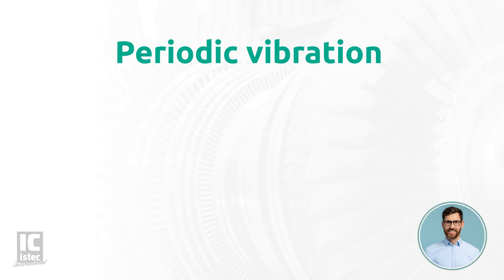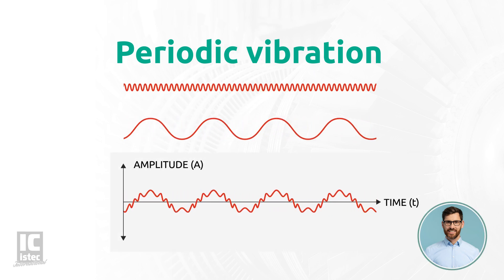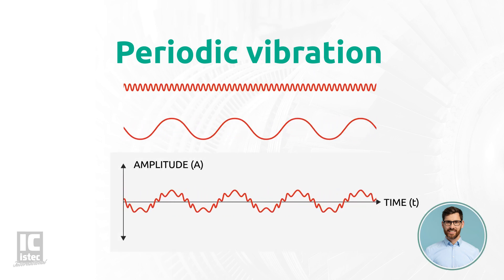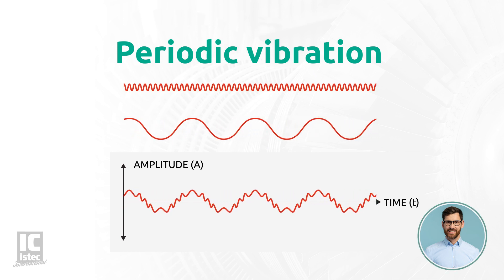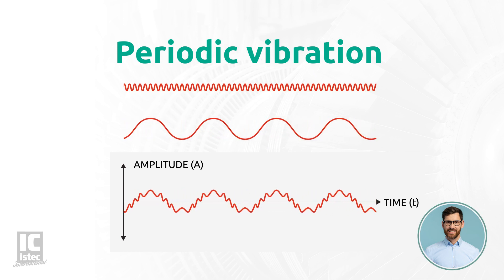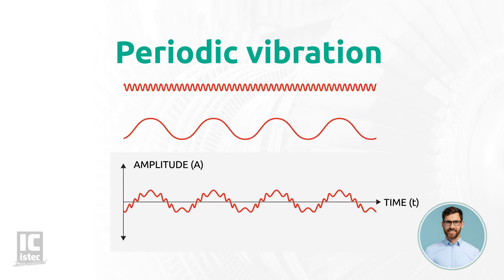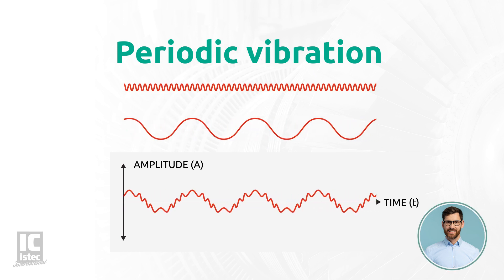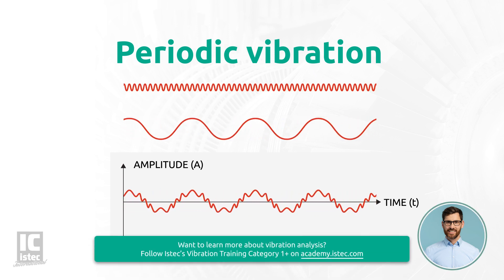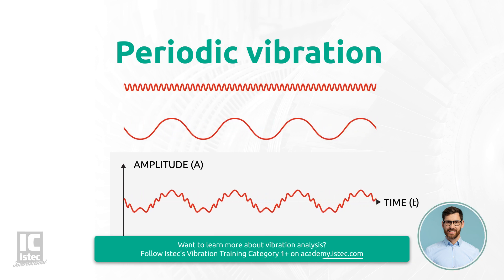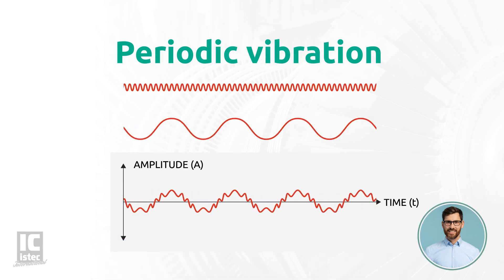Vibrations produced by rotating equipment or components are much more complex. When two vibrations are combined, the signal will no longer look like a pure sinusoidal waveform, but a superimposed combination of the two signals. These types of signals are far more common for rotating equipment in industrial environments.